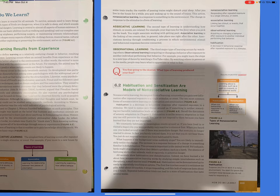Associative learning: the second type of learning is understanding how stimuli or events are related. For example, your dog runs for the door when you pick up the leash. You might associate working with getting paid. Associative learning is the linking of two events that, in general, take place one right after the other. Associations develop through conditioning, a process in which environmental stimuli and behavioral responses become connected.